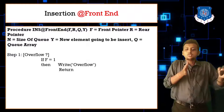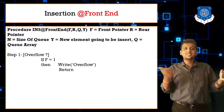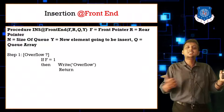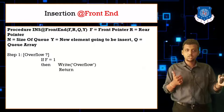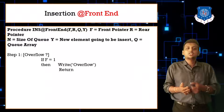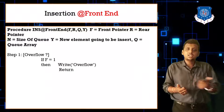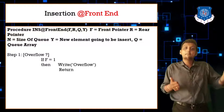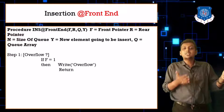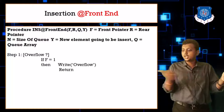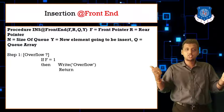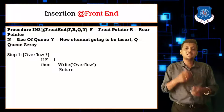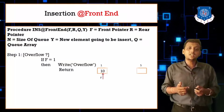Since you are inserting in the front-end direction, the insertion at front end works as follows: if F equals 0, then F and R both point to 1; else just decrement F. After that assign Q of F equals Y. So when inserting at front, you write Q of F equals Y, not Q of R.